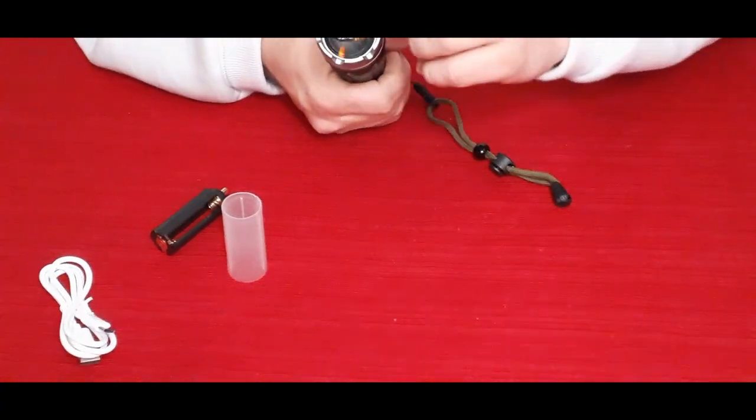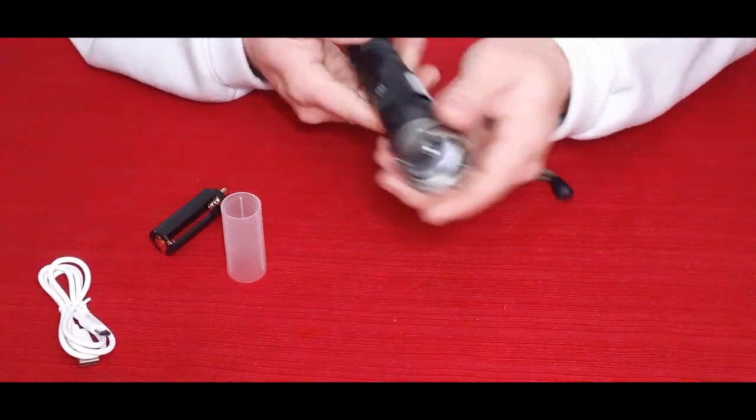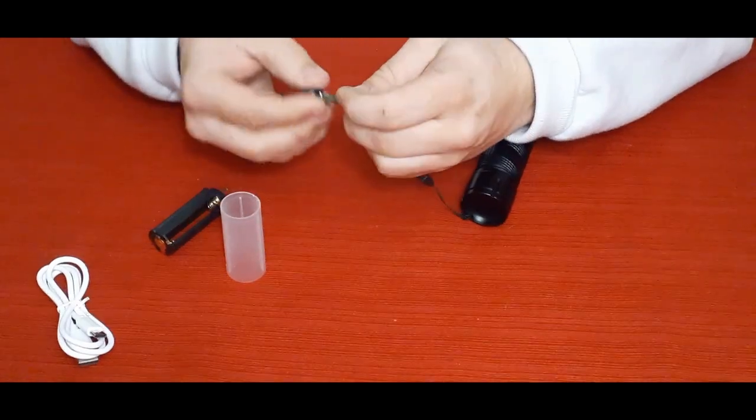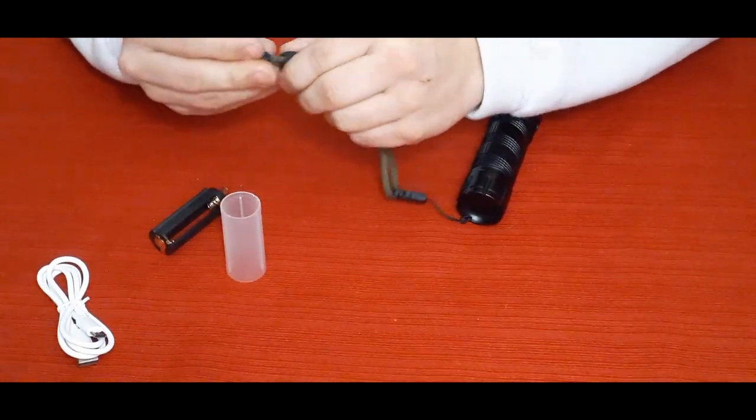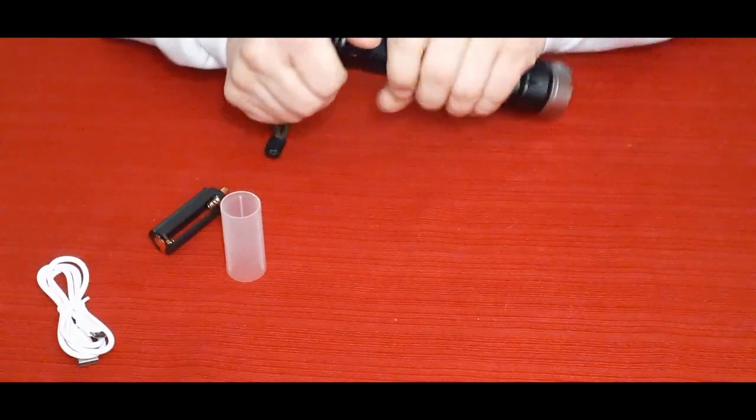We of course have the lanyard with the little keepers and stuff. You've got the little slide bolo type thing there, and then you've got the little bead there as well, which is very nice.